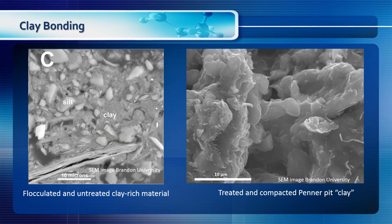Illustrated are scanning electron microscope images taken at high magnification. The left image shows natural clay-rich material that is both flocculated and untreated. The right image shows pipette clay material that has been treated with the catalyst and compacted. The clay in this image is well bonded and illustrates what must take place in order to produce a well-bonded road surface.